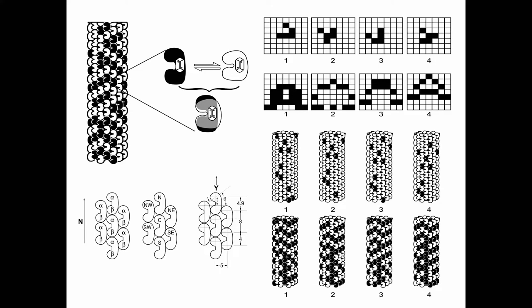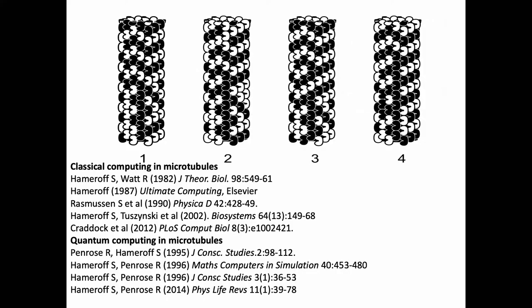I was learning about computers in the early seventies and had the idea that tubulin might change its conformational shape to represent information due to dipoles inside them. Working with physicists and engineers, I did studies comparing microtubules to the Game of Life — a cellular automaton on a grid — applying it to the hexagonal cylindrical lattice of microtubules, and showed they could indeed process information, with interesting properties because of the cylindrical wraparound. I published a number of papers in the eighties and early nineties about classical information processing in microtubules, then subsequently teaming up with Roger, several papers from the mid-nineties about quantum computing in microtubules.